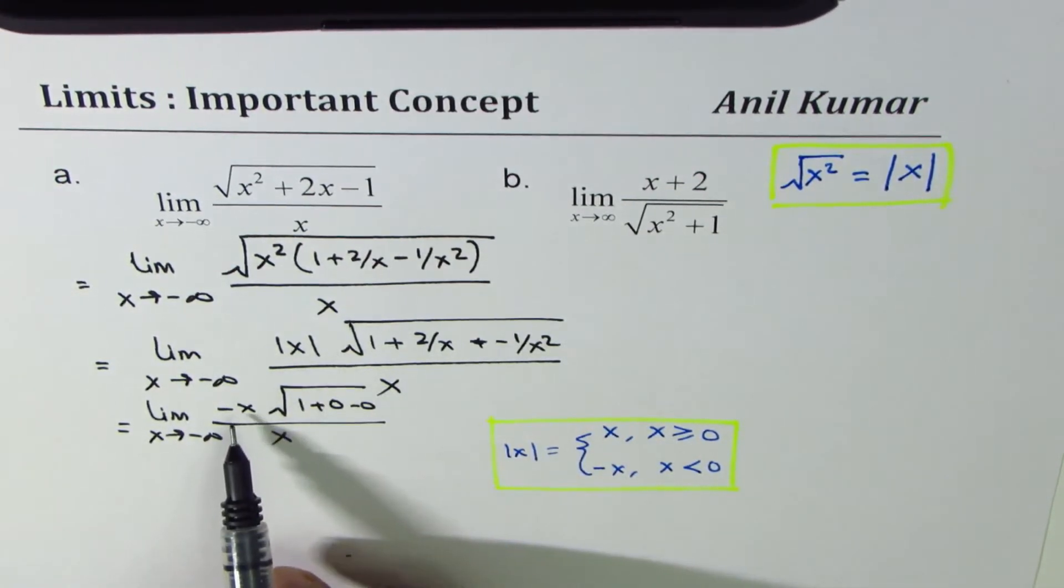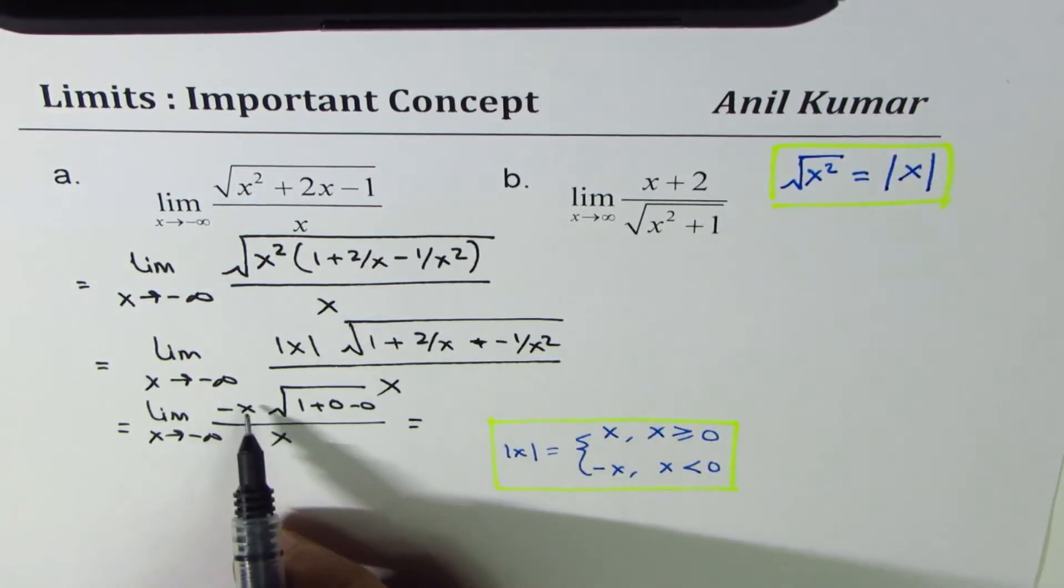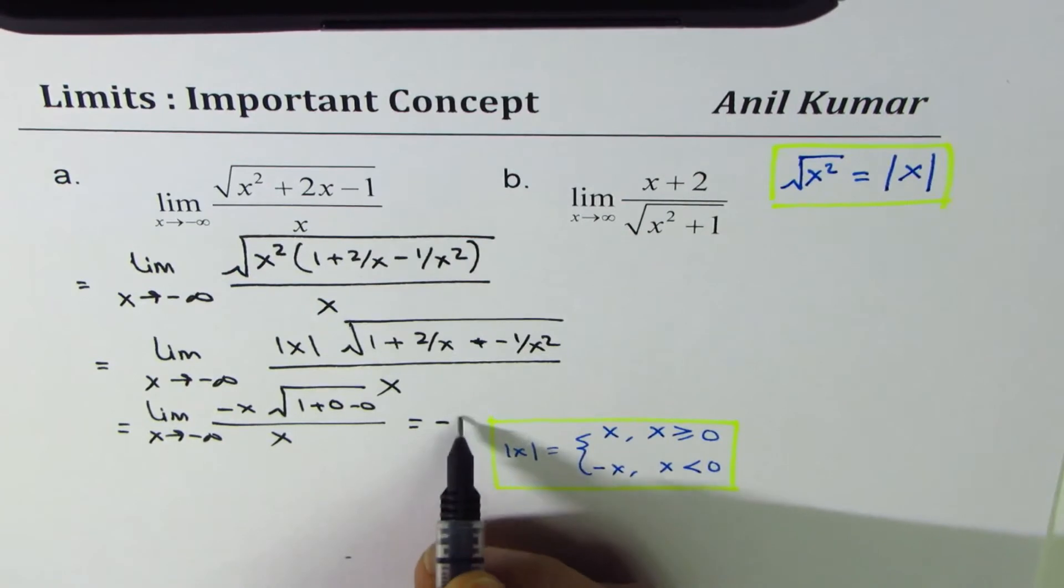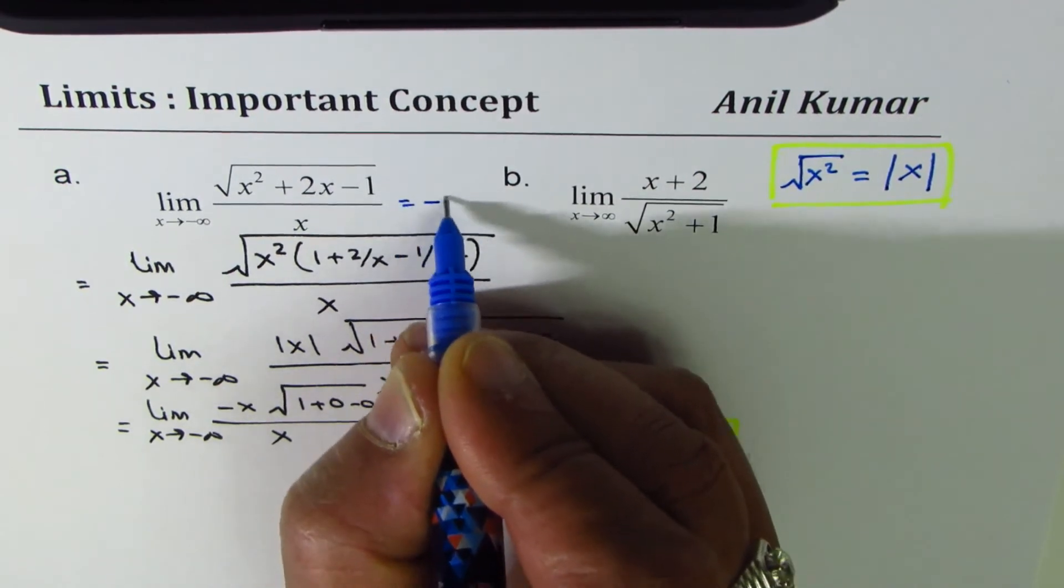Absolute x is approaching minus x. And then what do we get? Minus x divided by x is minus one. Do you see that? So we get our answer for this limit. It is equals to minus one.